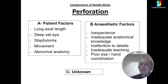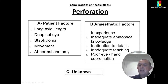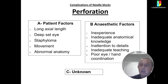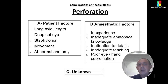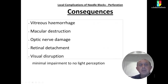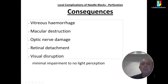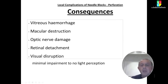Globe perforation and penetration can result from anesthetic factors — inexperience, inadequate anatomical knowledge, inattention to detail, or poor eye-hand coordination — or from patient factors, such as performing needle blocks in patients with long axial length or staphyloma, where the globe is fragile. Consequences include vitreous hemorrhage, macular destruction, optic nerve damage, retinal detachment, and visual disruption, potentially leading to no light perception. A patient coming for cataract surgery hoping for improved vision could end up with a blind eye — a very serious complication.